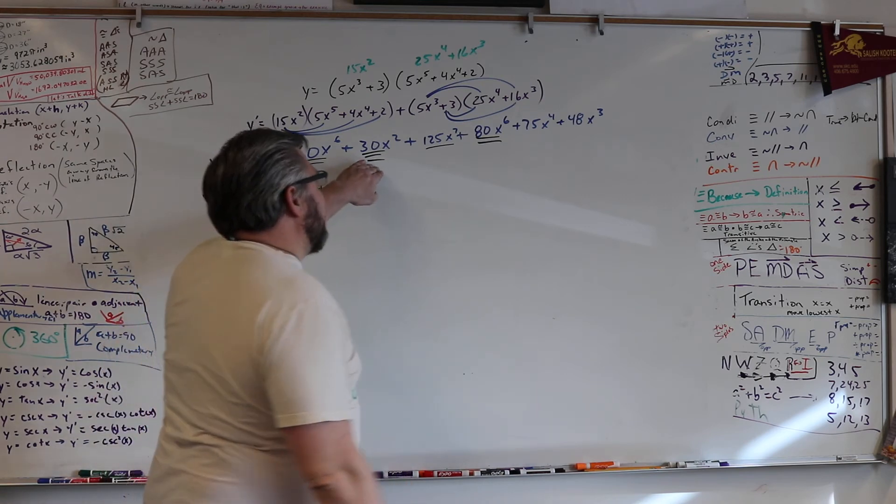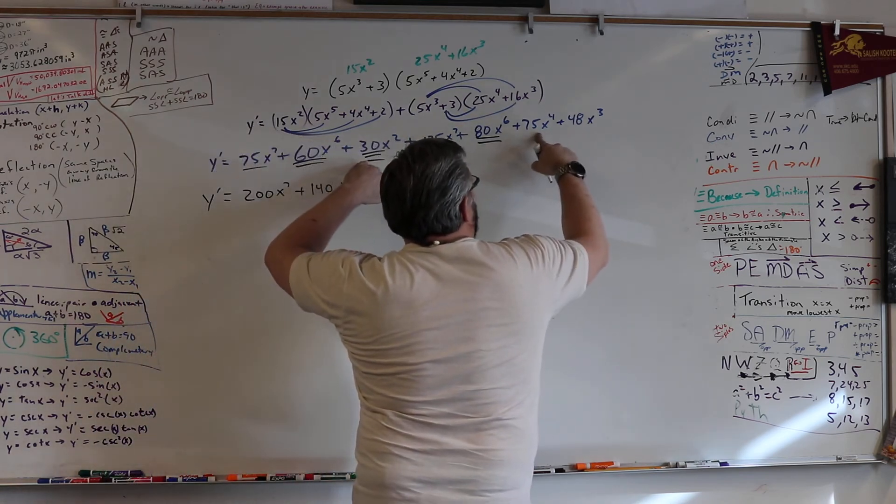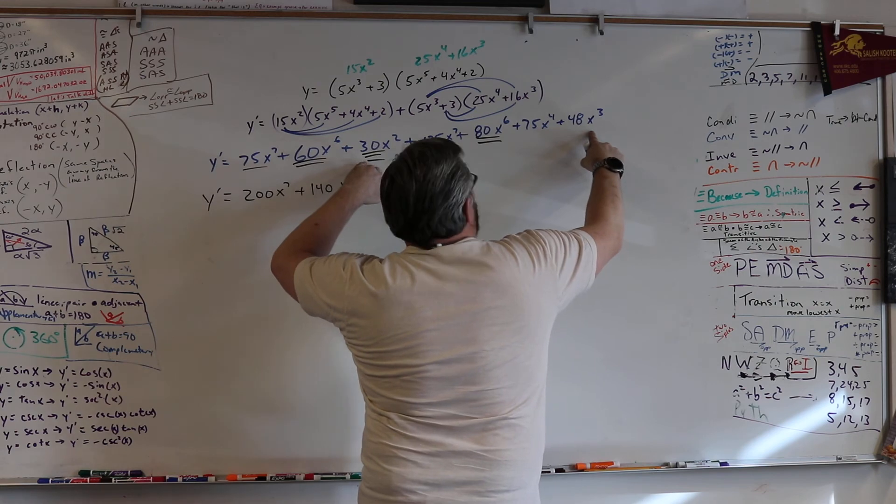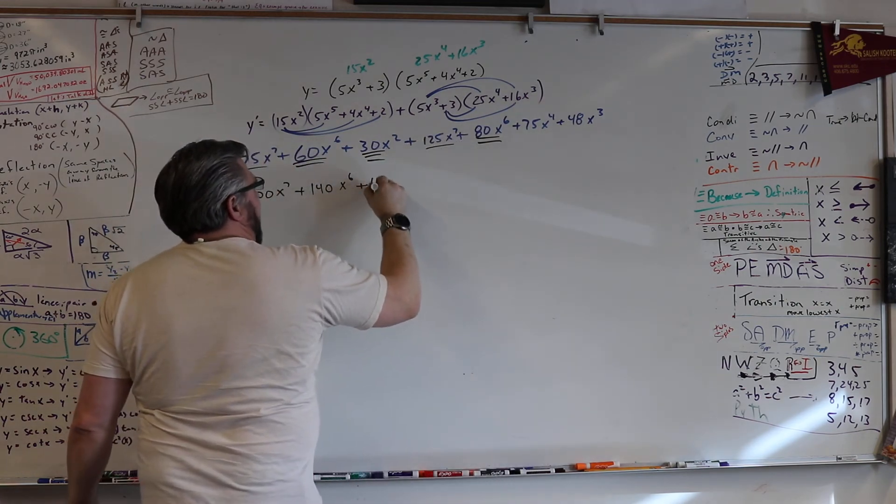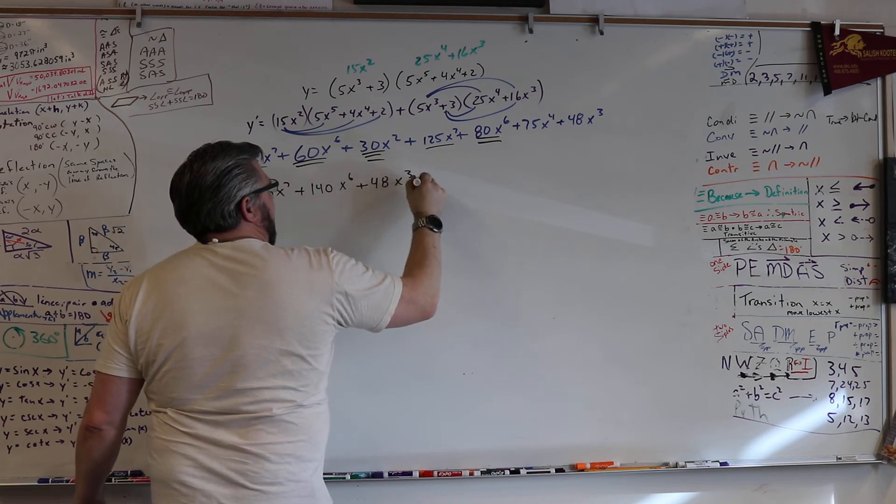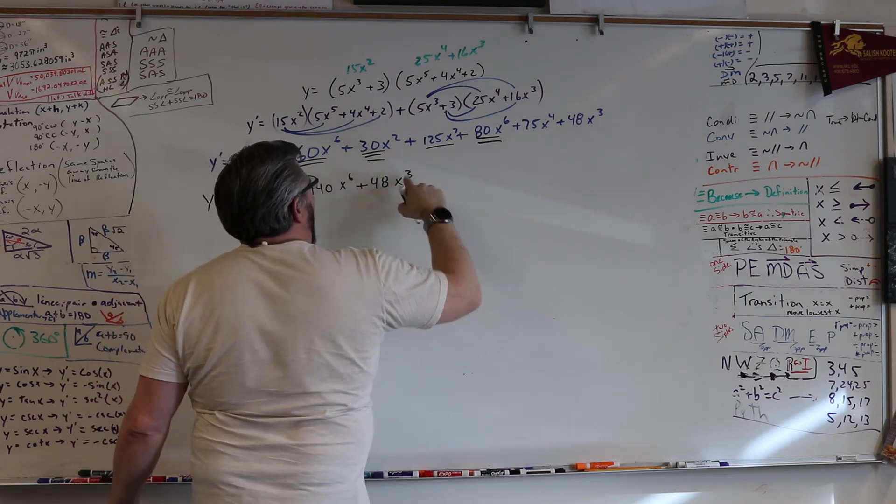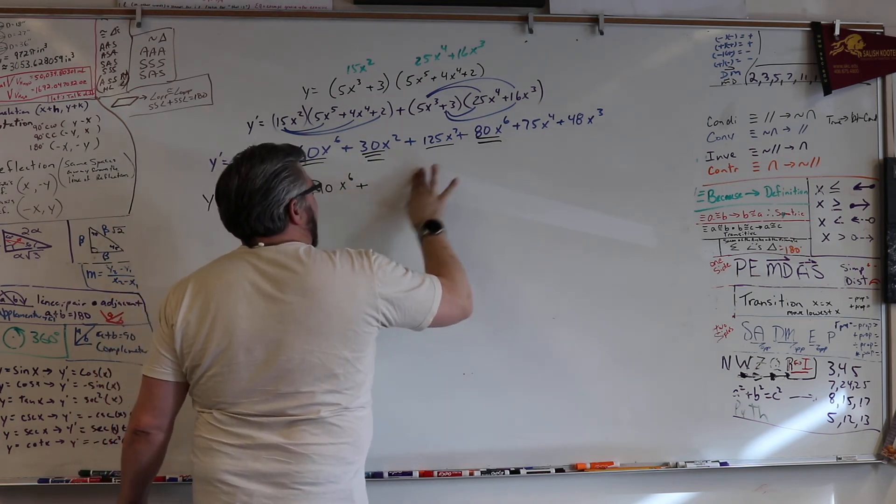Any twos? No. Any fours? No. Any threes? No. All right, let me just write them out. 48 x to the third. No, we got to do the four first, right? Yeah.